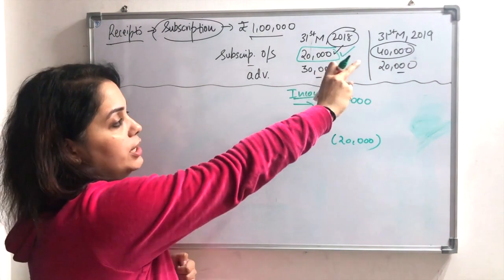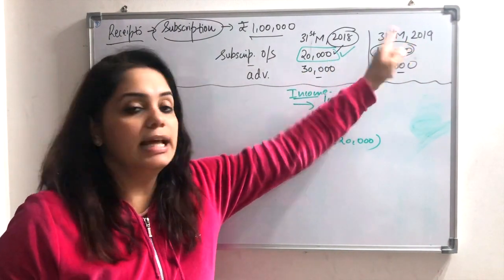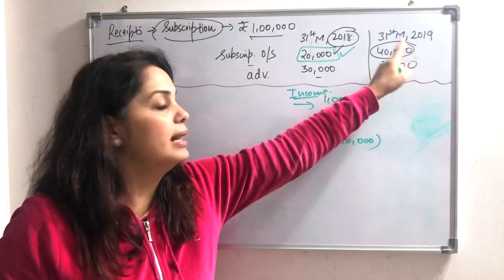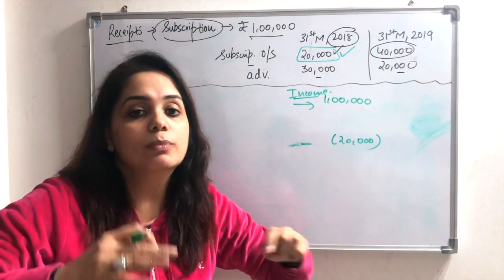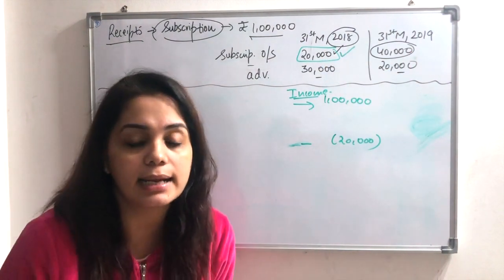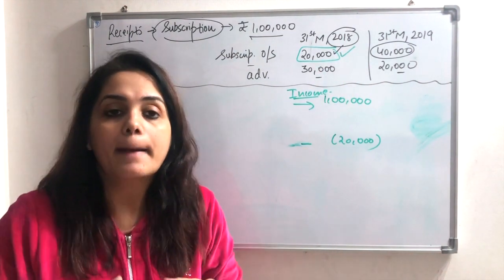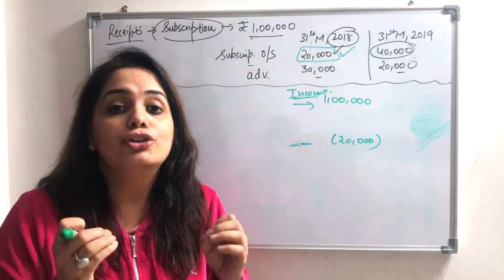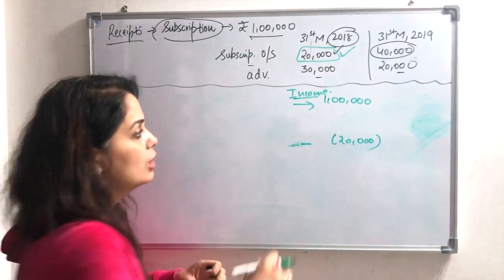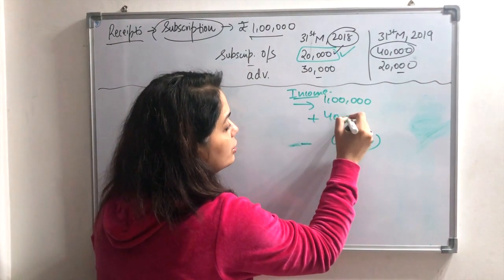Now I will make the year end outstanding. This is my current year. Due but not received. So due was this year? This year. So I will make here 40,000 plus.